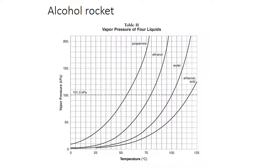As an example, an alcohol rocket: at certain temperatures gases have certain pressures. This is why you'd use propanone over ethanoic acid — the vapour pressure of propanone is much higher at each temperature, allowing the combustion chamber to expand and propel into space.